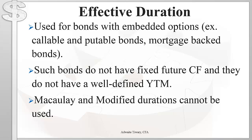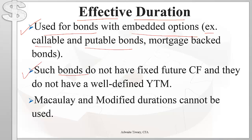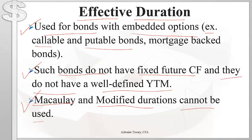Now let's look at effective duration. This measure is used for bonds with embedded options, such as callable and putable bonds, which do not have fixed future cash flows. For example, if interest rates go down, the issuer of a callable bond has an incentive to call the bonds and issue new ones at the lower rate. Because the future cash flows depend on whether bonds will be called, they are uncertain — and that's why Macaulay and modified durations cannot be used, since yield to maturity is a required input for those measures.